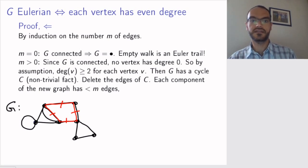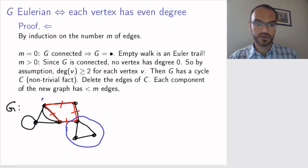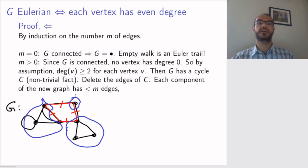So having done that, I am left with one connected component here, one connected component here, and one connected component that is just an isolated vertex. Now, in this new graph, since I have deleted at least some edges, I will have fewer edges. And each component of this graph will then obviously have fewer than m edges.